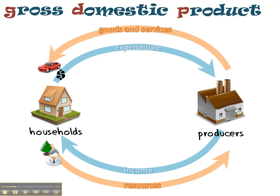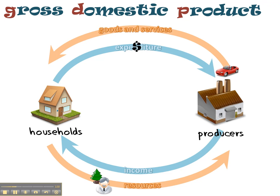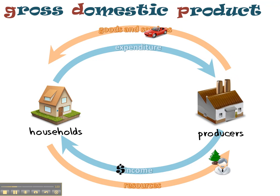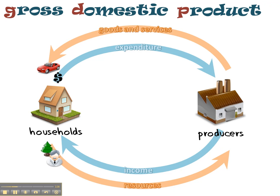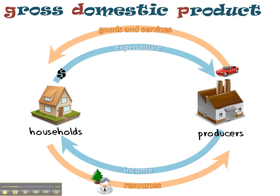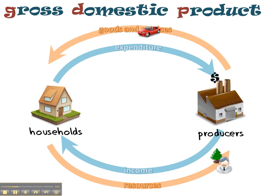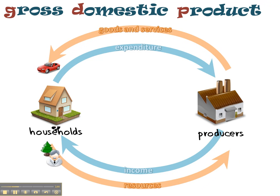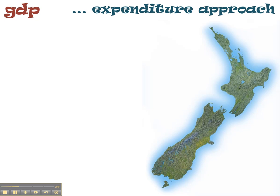So we've got four flows — two money, two real: expenditure and income, goods and services and resources. We're going to use those two money flows to calculate GDP in New Zealand. Let's look at those two approaches: the expenditure approach and the income approach. First, the expenditure approach.